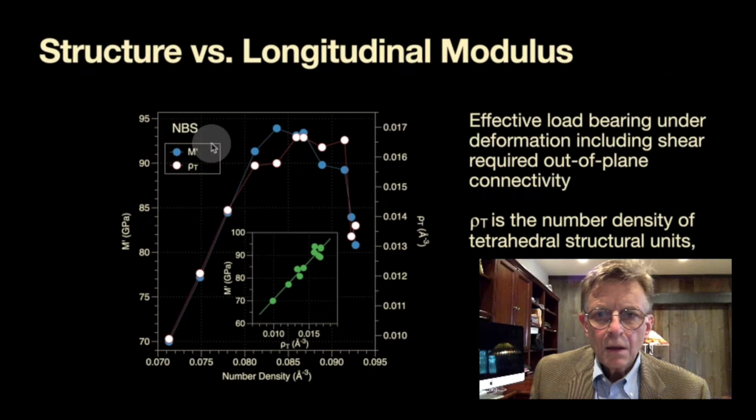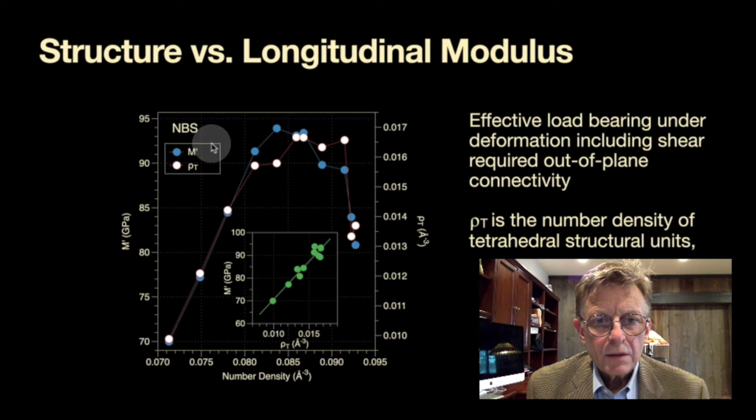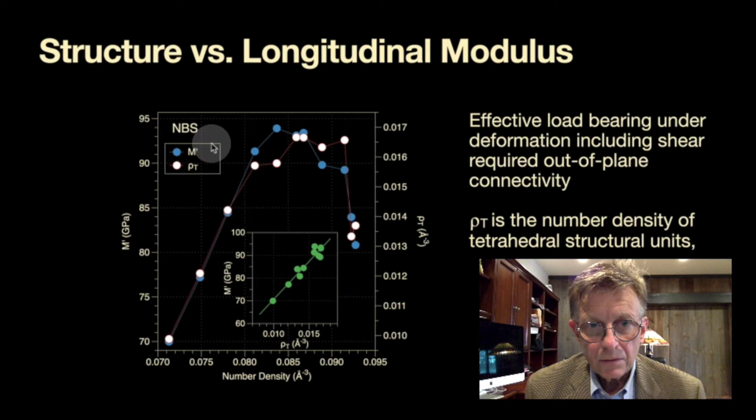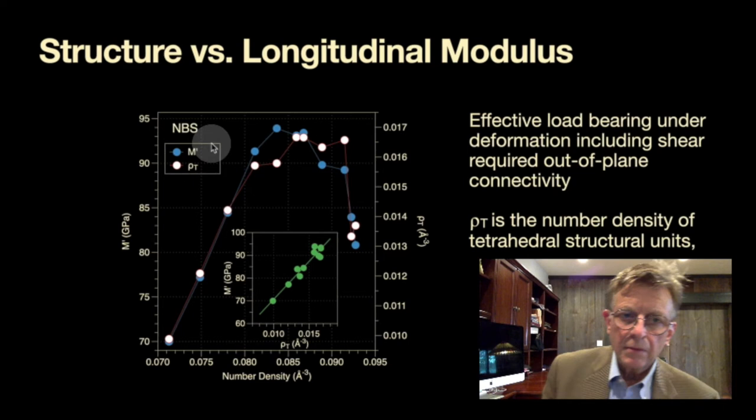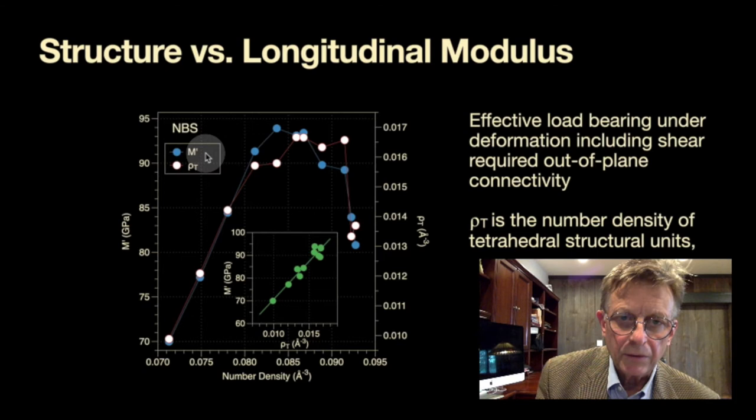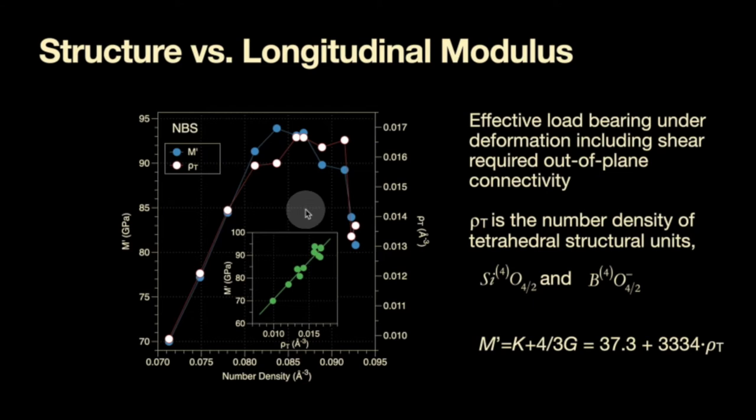And the way that we did this is based on the following observation. Recall that the elastic modulus tells us something about the bonding topology in the network, so the more bonds there are the stiffer it is. In particular if you want to have a good resistance to the shear deformation you need bonding that goes out of plane, means you have a three-dimensional connectivity that's necessary from each point. And so we plotted the longitudinal modulus which contains both the shear and bulk modulus as a function of the composition here expressed in terms of number density and we get these blue dots and this is for the sodium borosilicate system NBS. And then we compare to that the density, the number density again of the species that are highly coordinated in the network, that means both silicon 4 and boron 4 and you see that those are the white data points they're tracking each other pretty well.